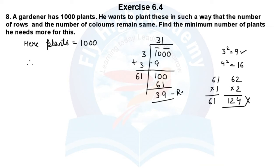Therefore, 1000 is more than 31 square. 31 square is less than 1000. So I will go to the next perfect square number. What will be after 31? What is it? 32.